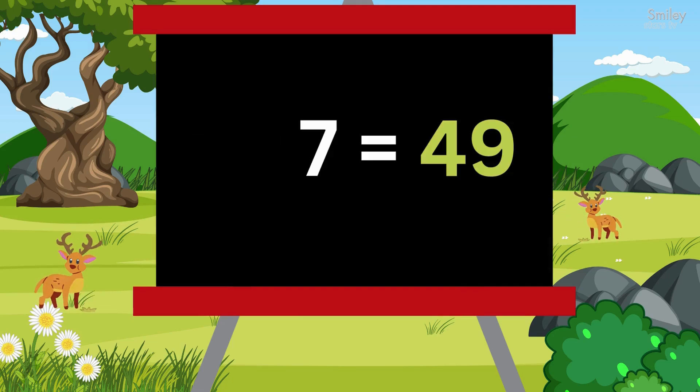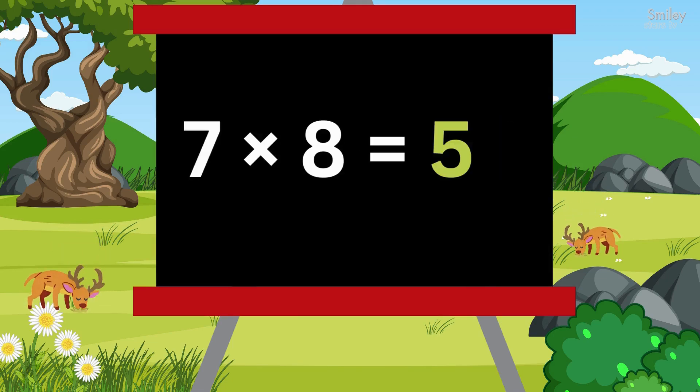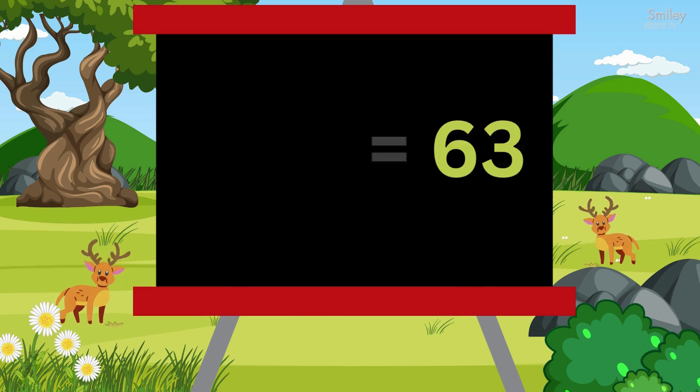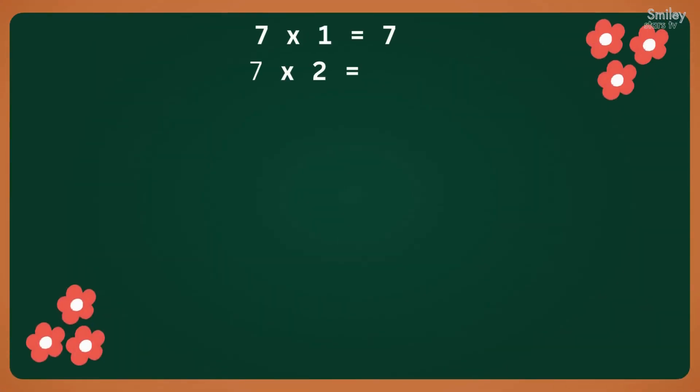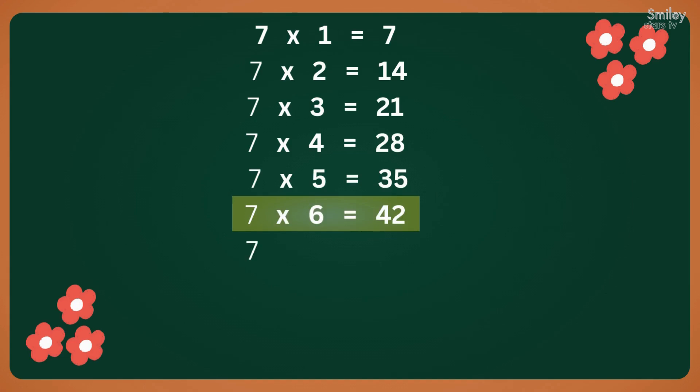Seven eights are fifty-six, seven nines are sixty-three, seven tens are seventy. You're doing great, let's sing it again.